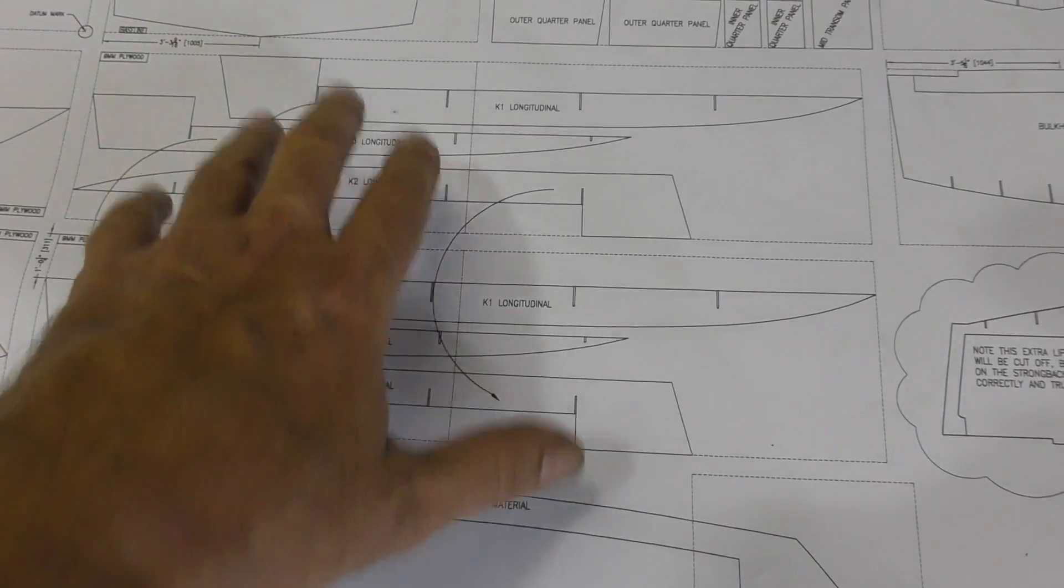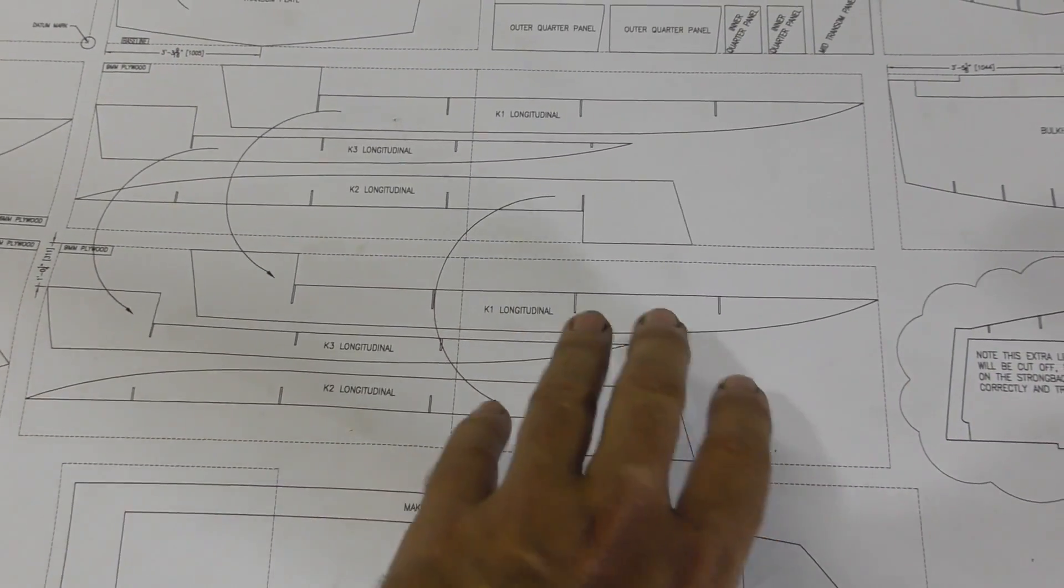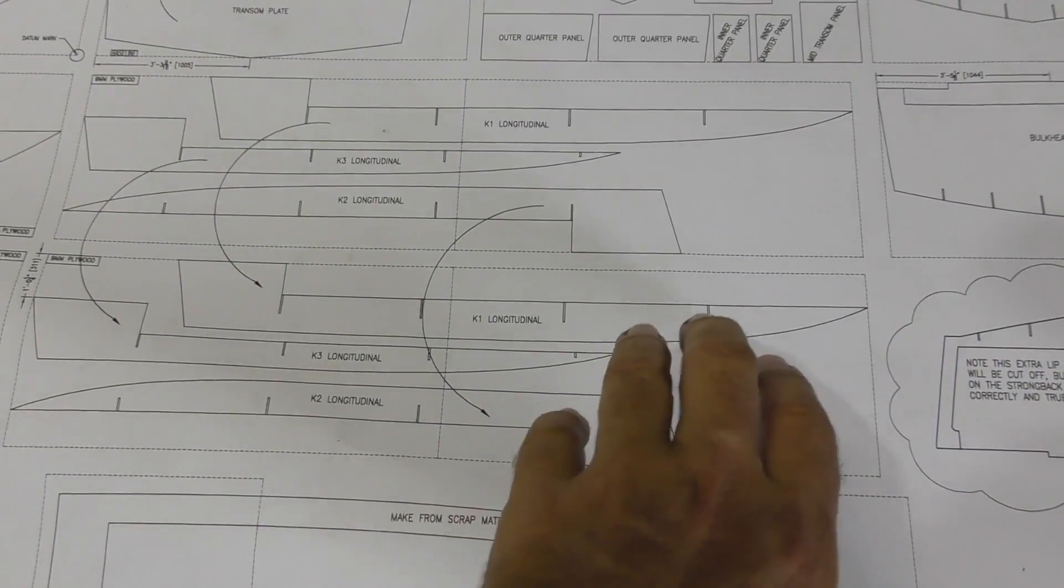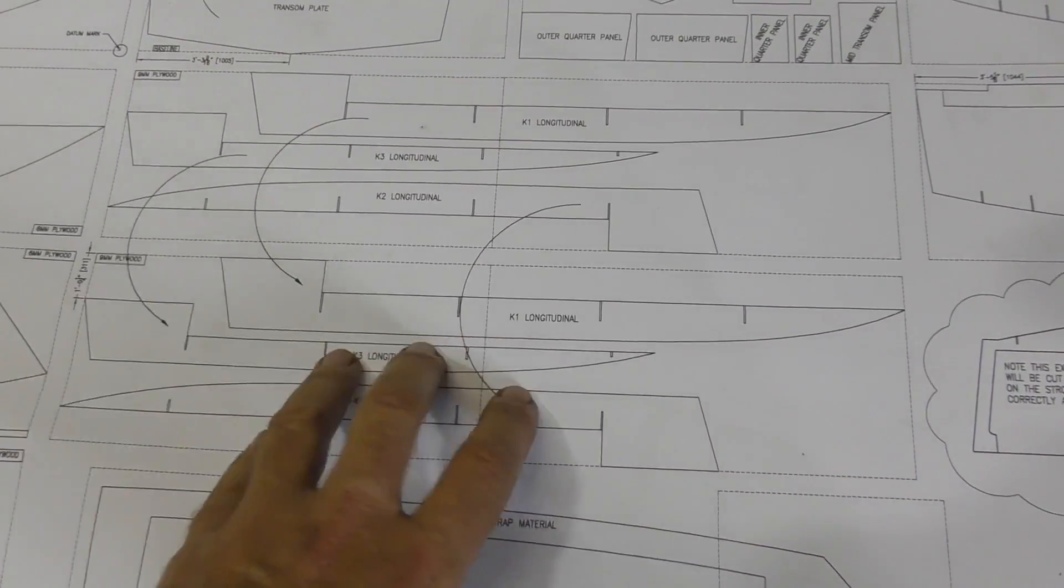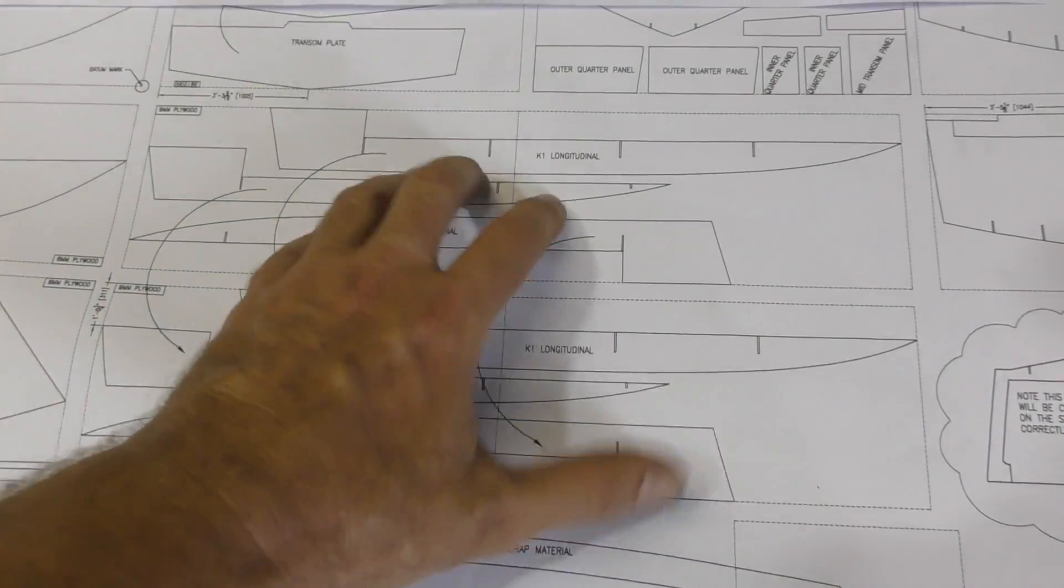We only have to loft one set of these longitudinals, so three of them, because the others are just a mirror image. So we'll draw one out, cut it out and then we'll use those to trace the second set here.